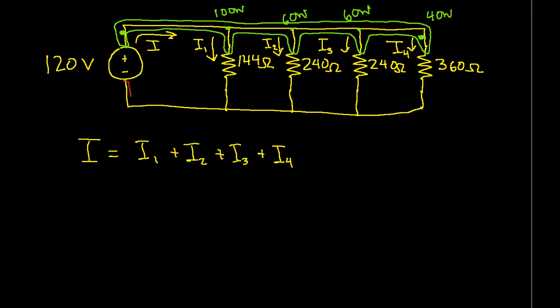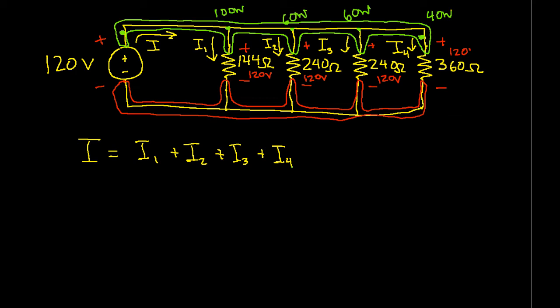Similarly, the part that I'm outlining in red is also all one node. This is important to me because the voltage source is going to make sure that the voltage between the green node and the red node is 120 volts. The voltages across all the resistors are 120 volts.